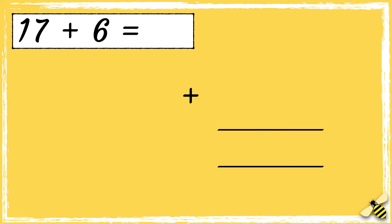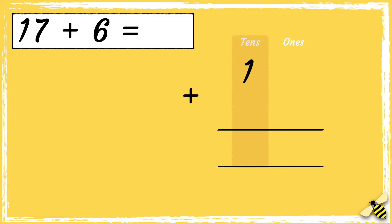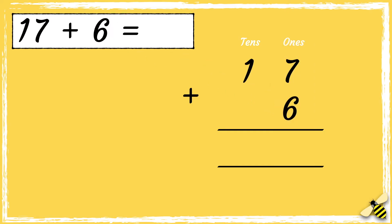We have the tens in one column and the ones in another column. The number 17 has one ten and seven ones. The number 6 has six ones. So now our column addition is set up and we can add the digits in each column.